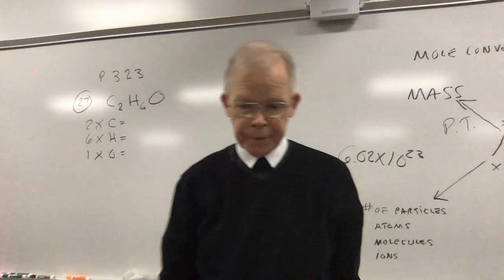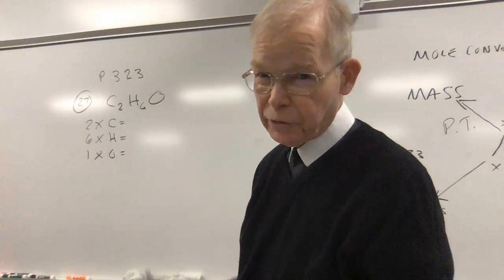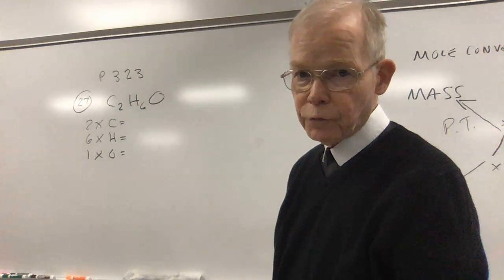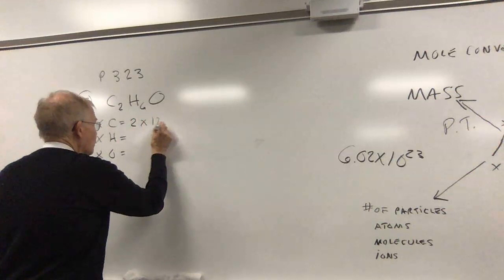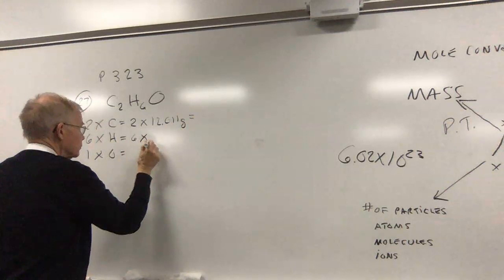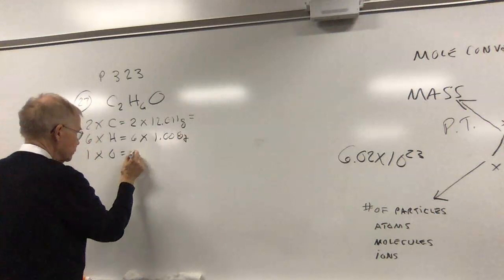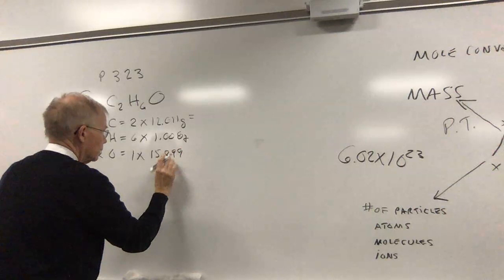Our next problem is number 27. That's a compound that's got carbon in it - it's probably an organic compound. They don't give us much information beyond that. It has two carbons, six hydrogens, and one oxygen. So I've set up to multiply through to get my total mass. Let's get the numbers off the periodic table. Two times 12.011 grams for the carbon, six times hydrogen's mass of 1.008 grams, and oxygen, one of them, 15.999 grams.